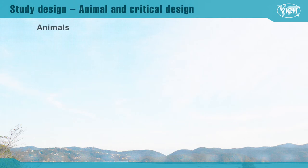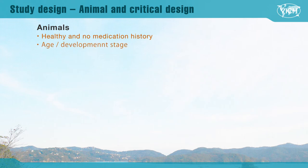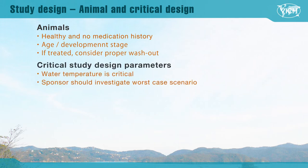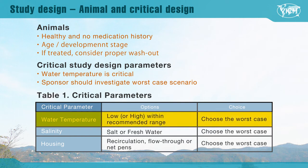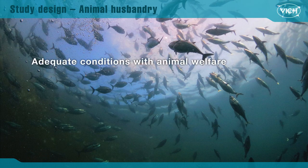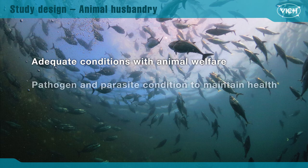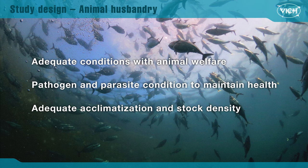For the study, use healthy animals, preferably that have not been medicated. The study should be conducted at the target age or in the latest developmental stage, since metabolic rate may differ from younger fish. Fish for the study should represent the commercial species and populations to be treated. Critical parameters for the study include water temperature, salinity, and housing. Water temperature directly influences drug absorption, metabolism, and excretion. Salinity is another parameter — even for the same species, salinity change may influence the residue. Husbandry conditions should consider animal welfare following national and/or regional regulations, and pathogens or parasites should be controlled. Fish must be acclimatized adequately and maintained at proper stocking density.